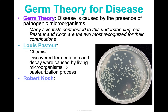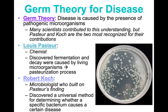Then you have Robert Koch. He was German, essentially a microbiologist, and he built on Pasteur's findings. He studied a lot of different bacteria and came up with a universal method for determining whether a specific bacterium was causing a specific disease. He was the first to really establish that cause and effect, which was huge in our understanding of disease and what caused it.